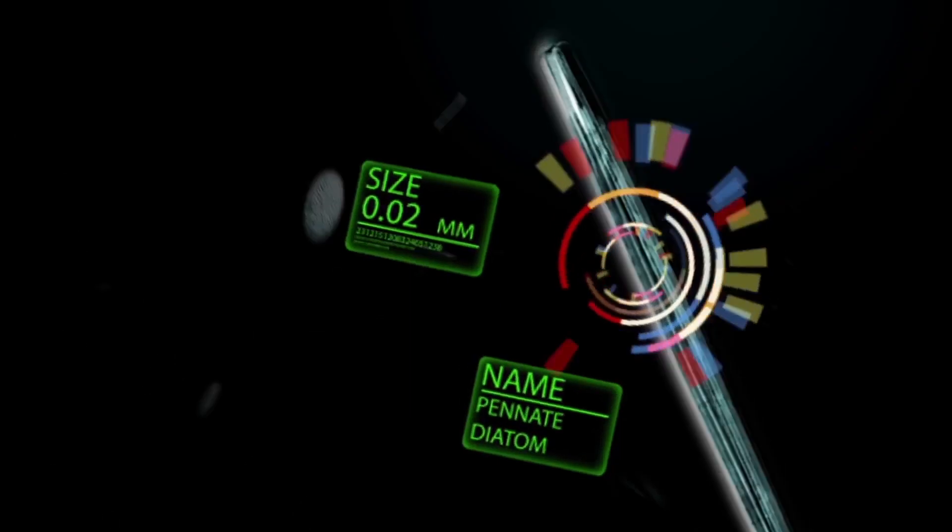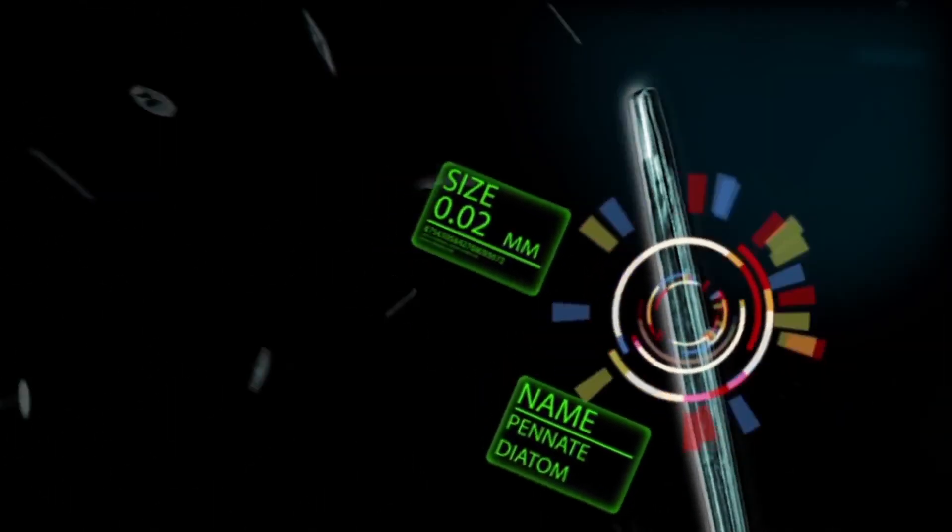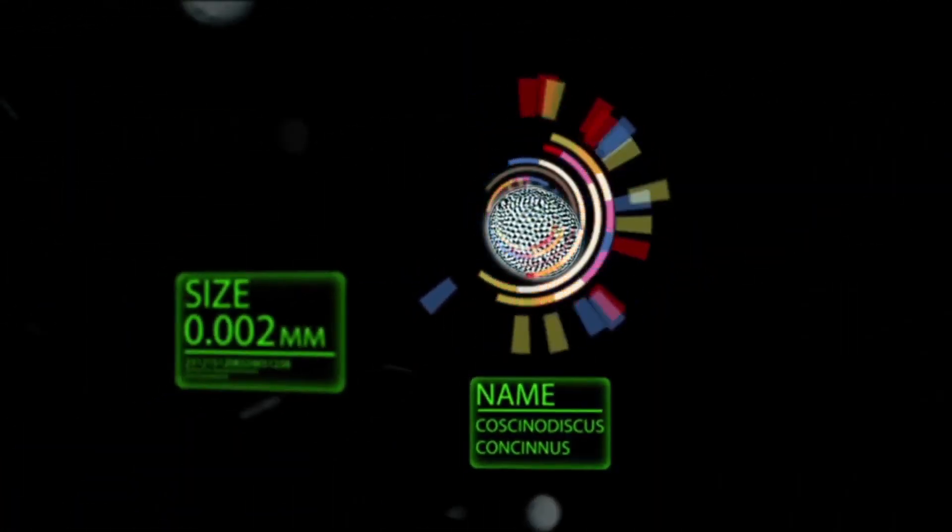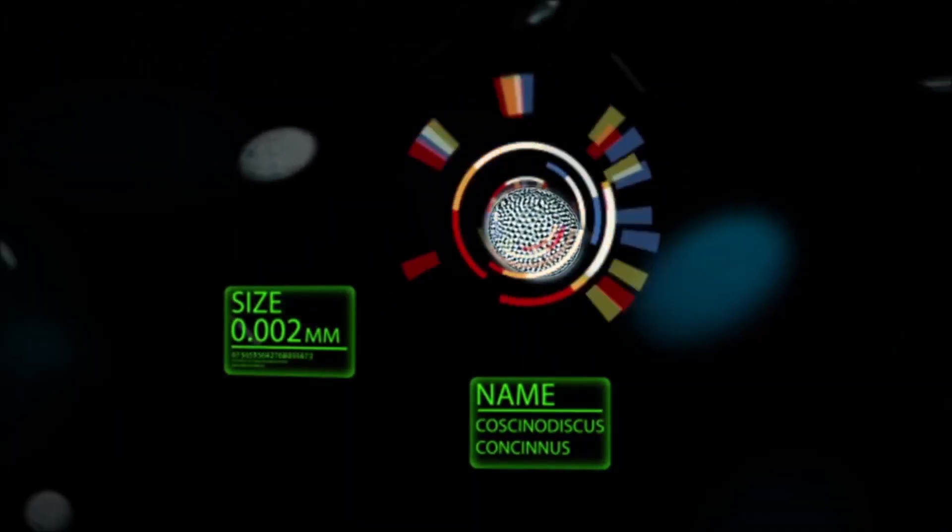Diatoms are very abundant and provide food for many aquatic animals. They form shells made out of silica, which they extract from the water. Their microscopic shells are very intricate and beautiful, and have rightly been called the jewels of the sea.